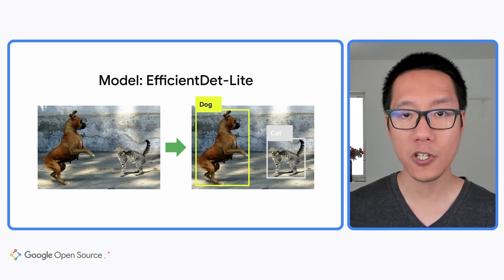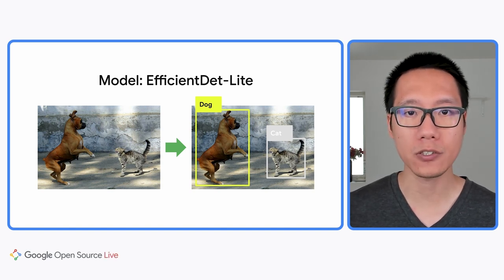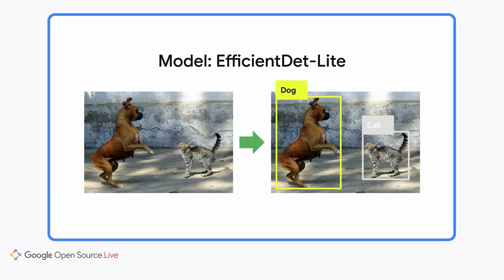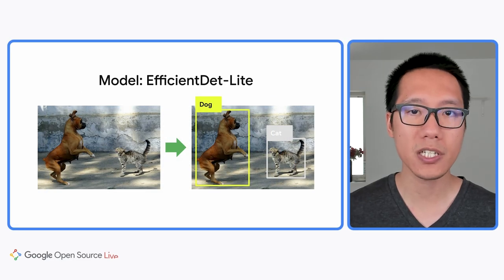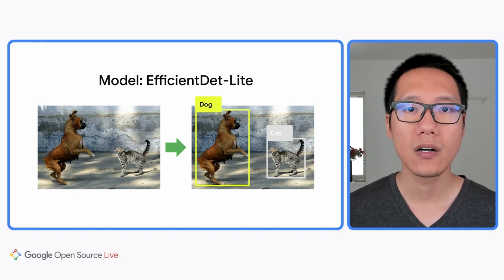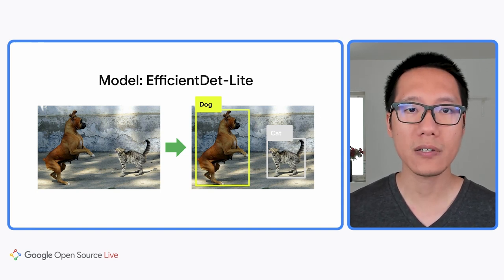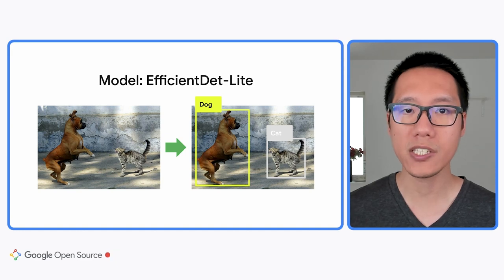Pre-trained models are machine learning models that are already trained to do a specific task. For example, there's a pre-trained object detection model called EfficientDet Lite. This model can recognize 70 types of different objects, like dog, cat, keyboard, television, and many more. The model takes an image as input and returns a list of objects that it recognizes, together with the location of the objects in the image. For example, the model can tell that there's a dog and a cat in this image and where they are.